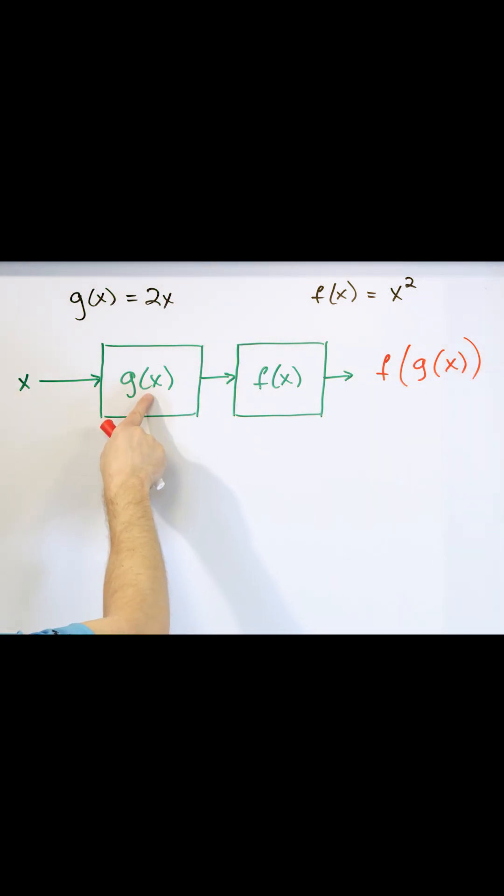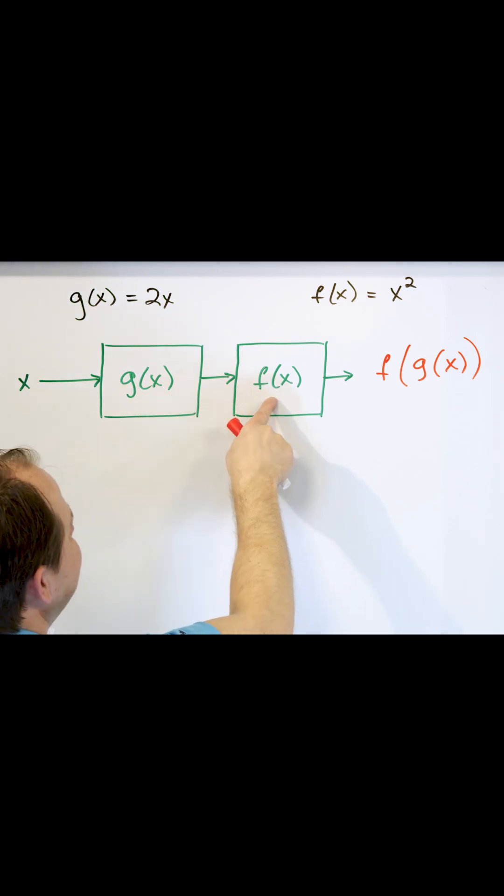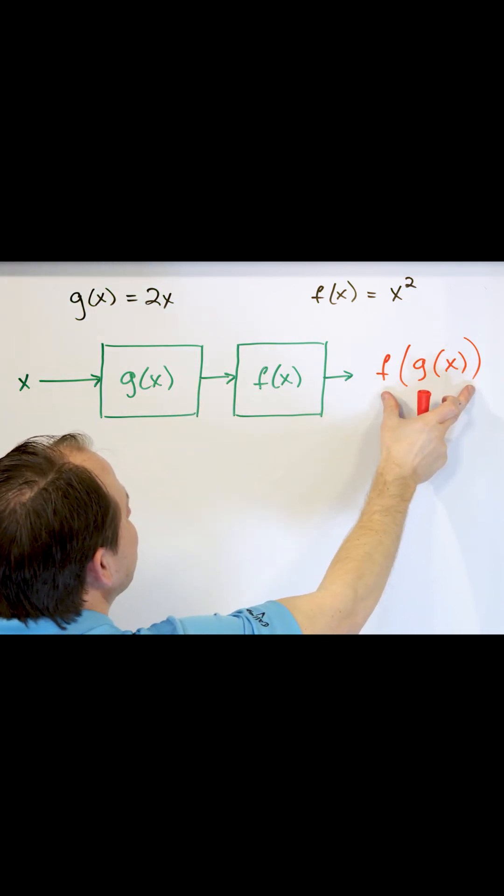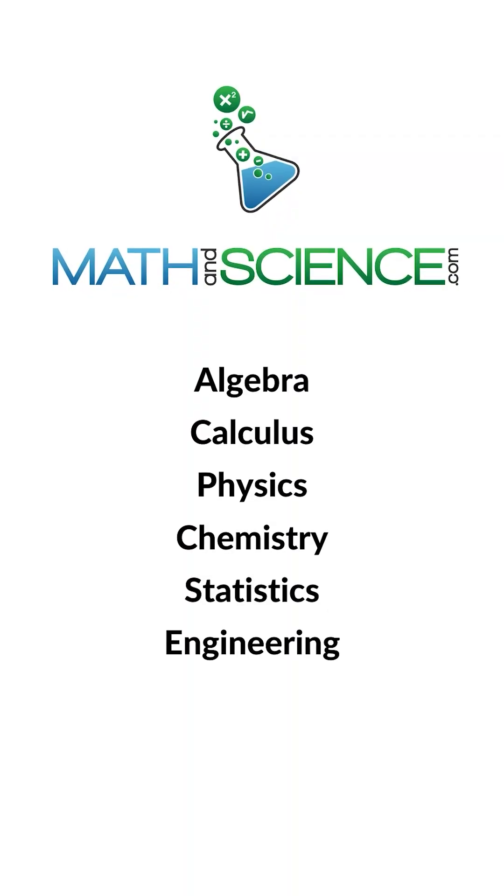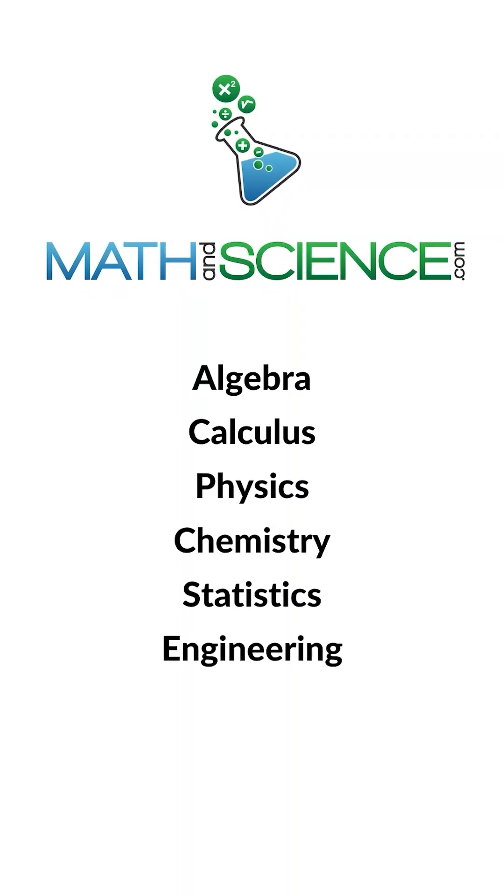Graphically, you stick a number in, calculate g of x, that number gets fed into f of x. But this is how you write it. It's called a composite function. Learn anything at Math and Science dot com.